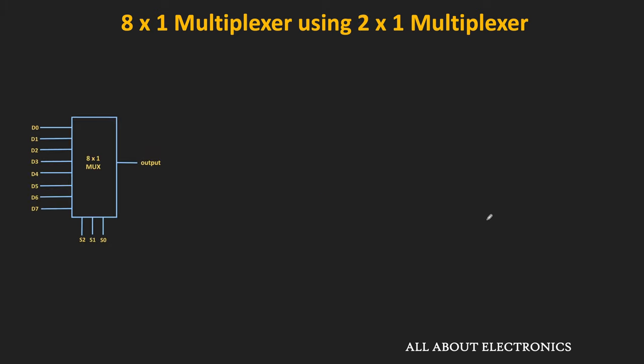In this way, we can implement any boolean function using a multiplexer. In the next video, we will see how to implement different logic gates using the multiplexer. I hope in this video you understood about the multiplexer. If you have any question or suggestion, let me know in the comment section below. If you like this video, hit the like button and subscribe to the channel for more such videos.